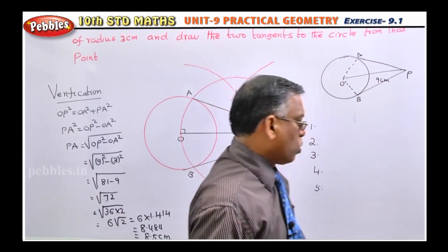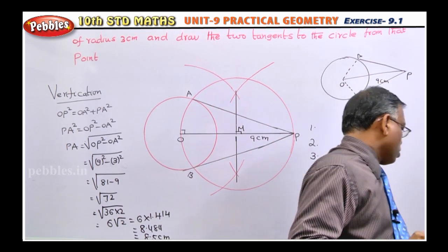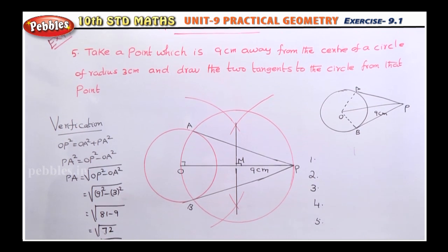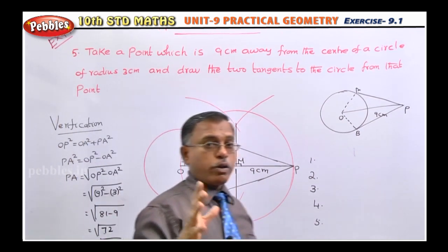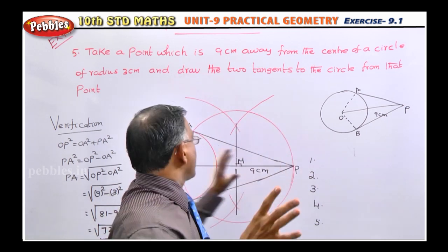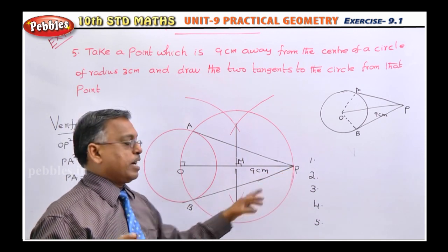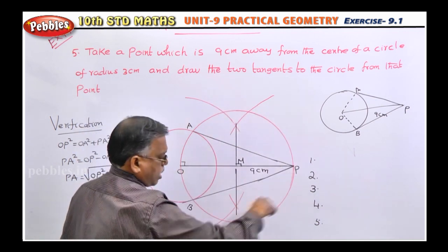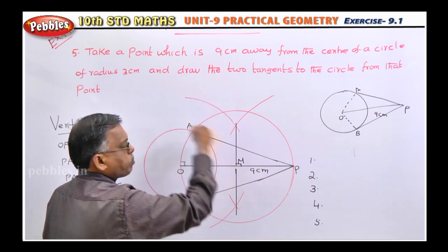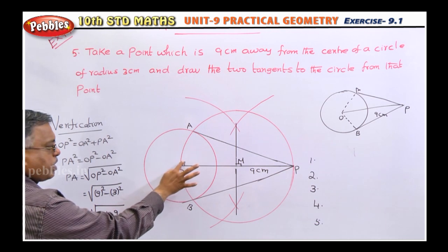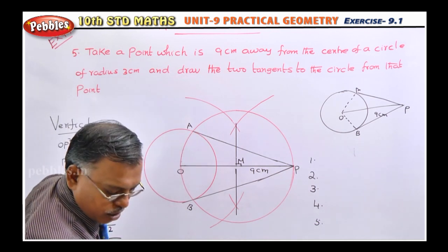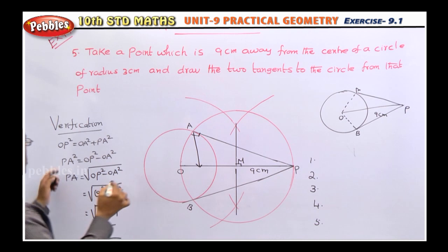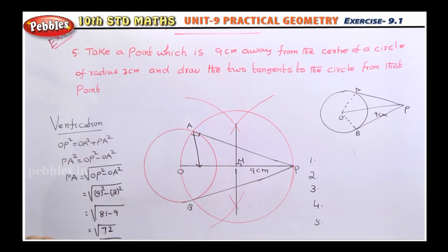Now let's see the next exercise. The fourth problem and third problem follow the same model. You draw the circle first, then take point P which is 9 centimeters away, draw the perpendicular bisector of OP, then with M as center and OM as radius draw another circle. It will intersect at A and B. Then join PA and PB. For verification, note that the angle at A is also 90 degrees — 90 degrees is always opposite the hypotenuse. So OP² equals OA² plus PA². This is the next exercise.